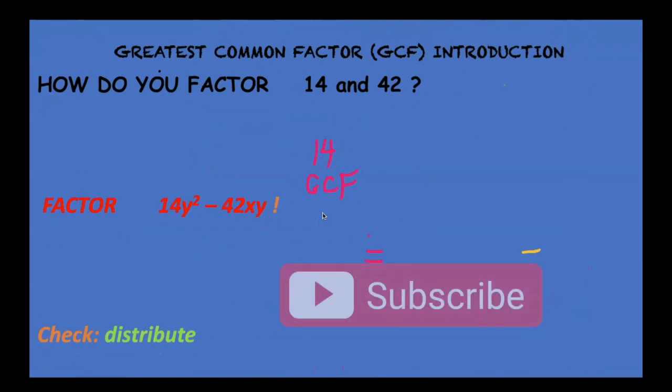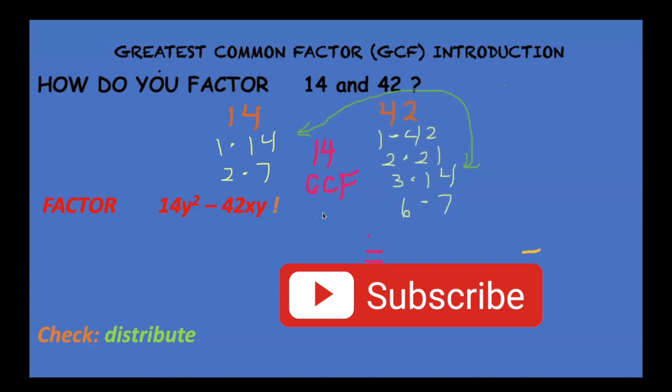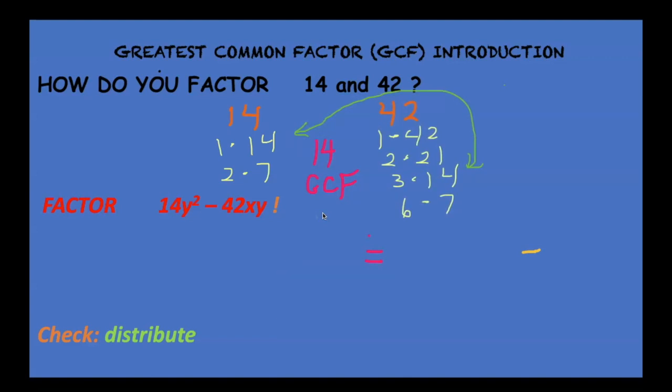Let's try 14 and 42. The factors of 14 are 1 times 14 and 2 times 7. 42 has a lot of factors. 1 times 42, 2 times 21, 3 times 14. That one you might not remember. 6 times 7. But now when you look between them, they have 2 and 7 and 14 in common. The greatest common factor is 14.